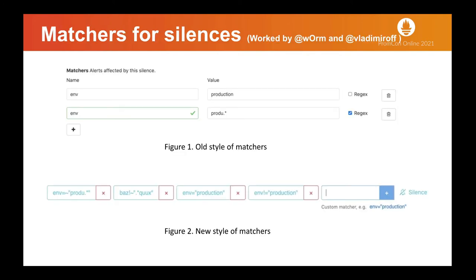Matchers for silences. This was worked on by Worm and Vladimirov. Silences are a way to simply mute alerts. It is configured based on matchers — incoming alerts are checked whether they match the equality or regex expression matchers, and if they do, the notifications will be configured accordingly in the web interface. This slide shows a comparison of the old and new matchers for silences. The old style did not support negative matching, and regex required an additional check mark. The new style changes it to the same UI that Alert Manager has for alert filtering on the landing page, making the UI consistent, easy to use, and compact.